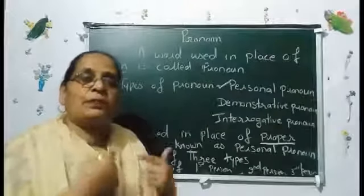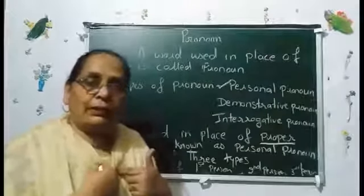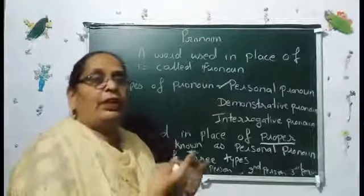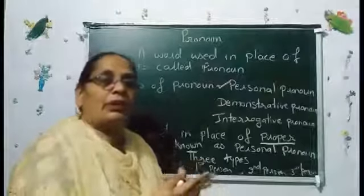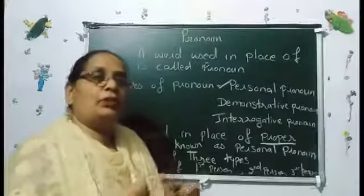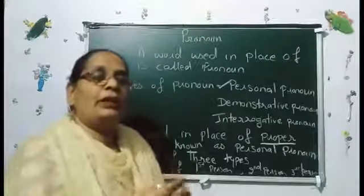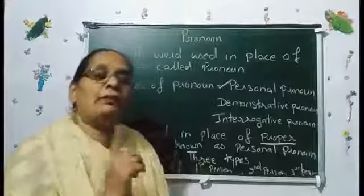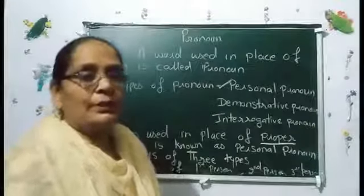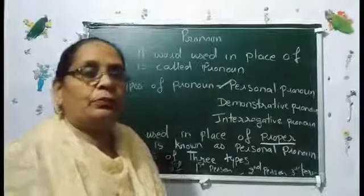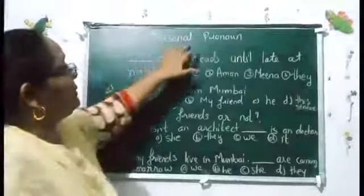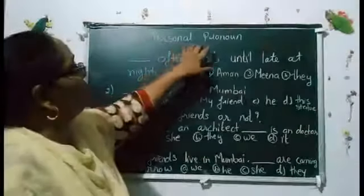First person is talking about yourself, second person is talking about the person you are speaking to, and third person is when two people are talking about a third person. Let's look at an example of personal pronoun.